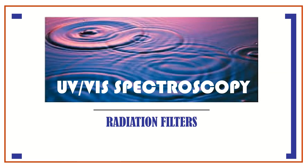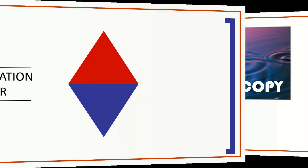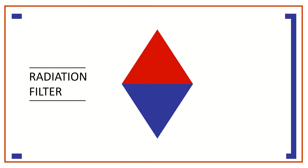In this video, you will learn the types of radiation filters and their process to isolate radiation wavelength for absorption measurement in UV and visible spectroscopy. Radiation filters operate by blocking or absorbing all but a restricted band of radiation. They are further classified as interference filters and absorption filters.